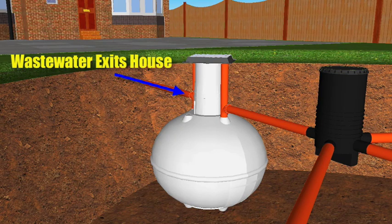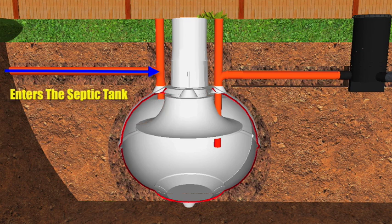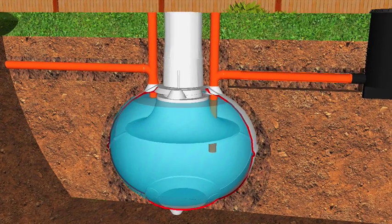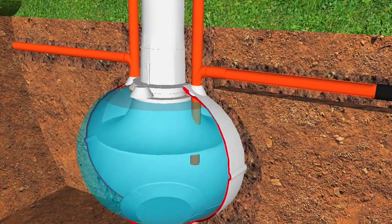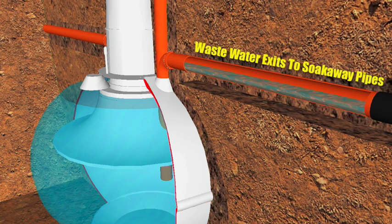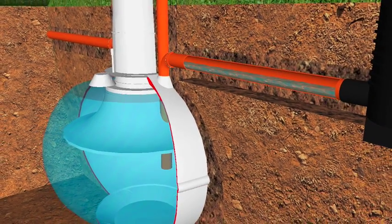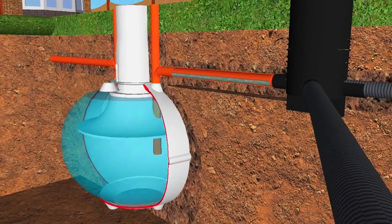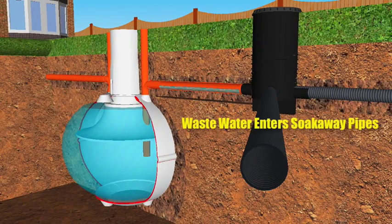The wastewater leaves the house and then enters into the septic tank. From there the wastewater makes its way up through the outlet pipe of the septic tank, and then makes its way from the septic tank towards the pipes that lead towards the soak away. From there the wastewater makes its way down the pipes into the soak away pipes, and then from there it drains naturally into the soil.